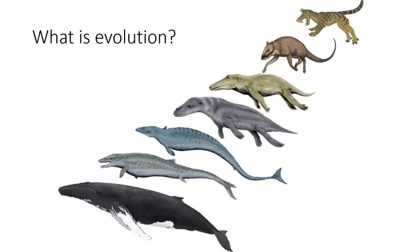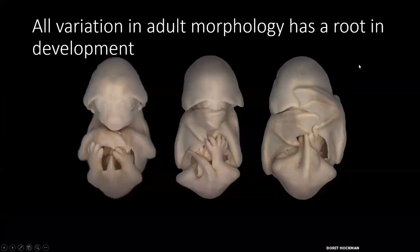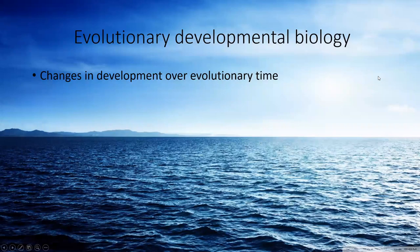So what is evolution? It's the gradual change over time. And most people who study evolution study it on population levels, looking at allele frequencies, genetic drift, and gene flow. But we should keep in mind that all variation we find in adult morphology has a root in development. These little cuties are bat embryos, which brings us to evolutionary developmental biology.